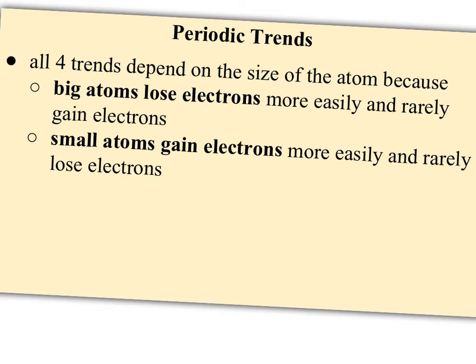In fact, I think all of chemistry becomes much easier. So the idea here is that big atoms lose electrons more easily and they rarely gain electrons, whereas small atoms gain electrons more easily and rarely lose electrons. And there's a reason why the large atoms are the losers and the small atoms tend to do the gaining of electrons.